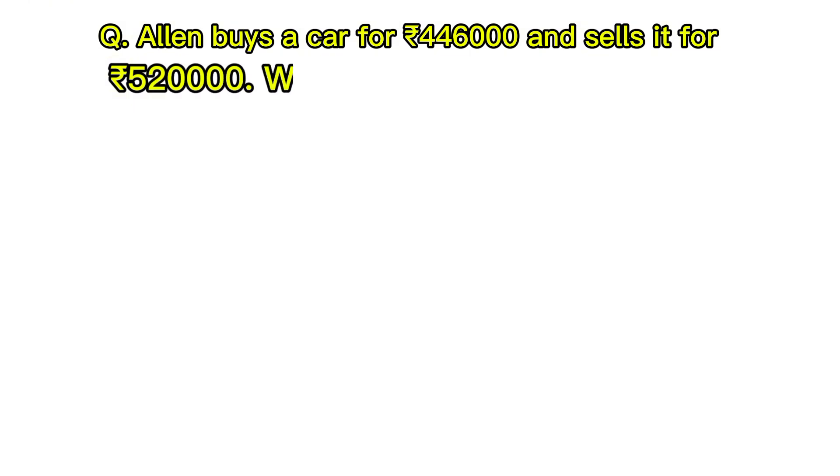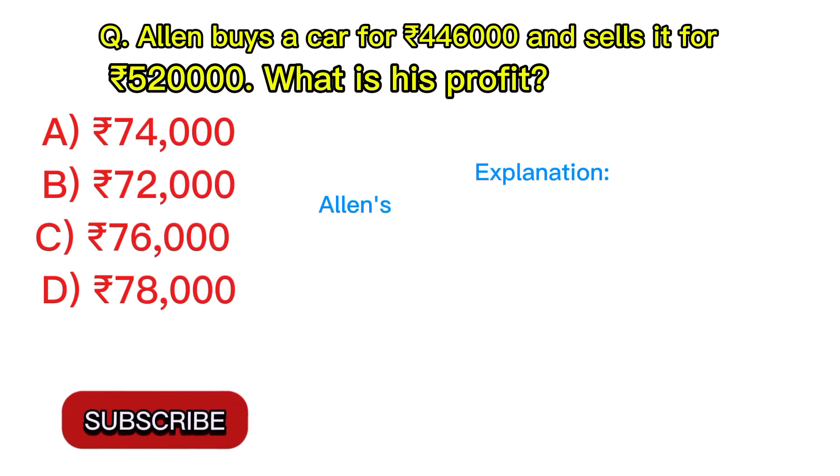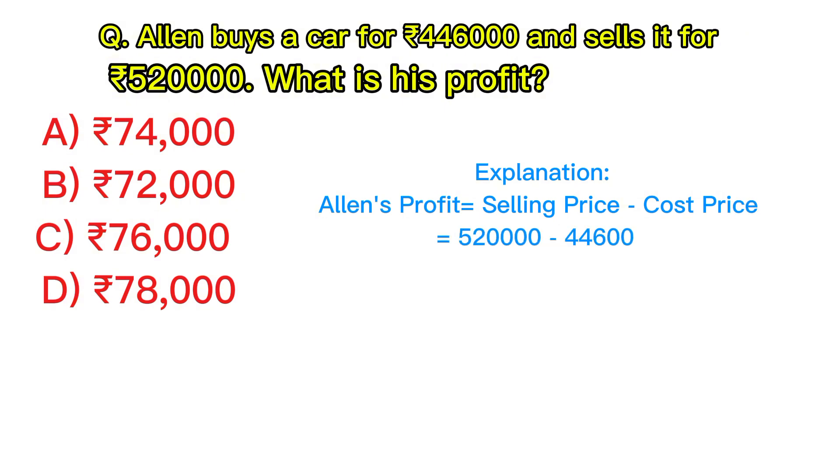Alan buys a car for ₹446,000 and sells it for ₹520,000. What is his profit? Explanation: Allen's profit equals selling price minus cost price, equals ₹520,000 minus ₹446,000, equals ₹74,000. Answer: A, ₹74,000.